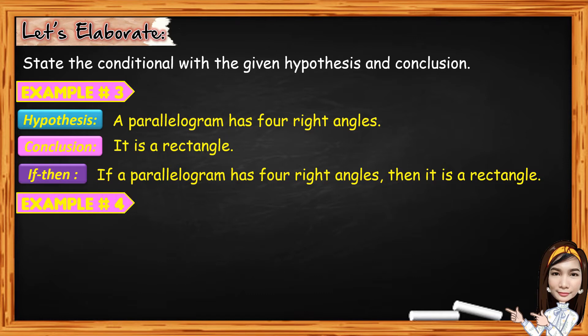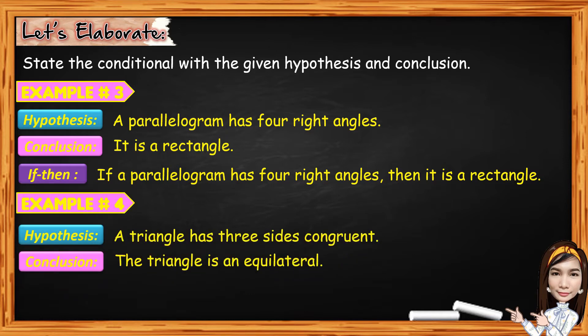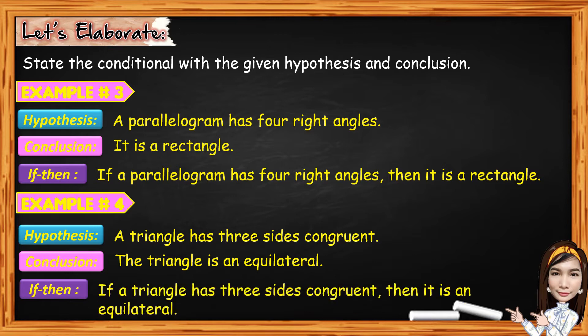For example number 4, given the hypothesis: a triangle has three sides congruent, and the conclusion: the triangle is equilateral. So we are going to state the conditional by writing it in the if-then form. And that is: if a triangle has three sides congruent, then it is equilateral. So we have the if and we have the then.